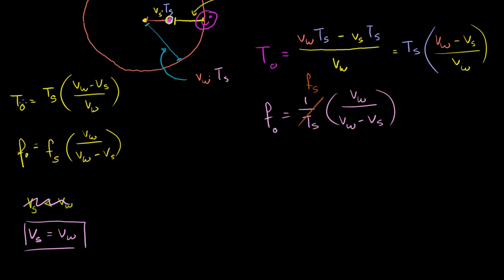These are the observed period and frequency for an observer in the direction of the object. If we make the assumption that the velocity of the source — and we're not necessarily dealing with sound waves, although that tends to be how I visualize it — equals the velocity of the wave, then these two quantities in the numerator subtract to give zero. So the observed period becomes zero.